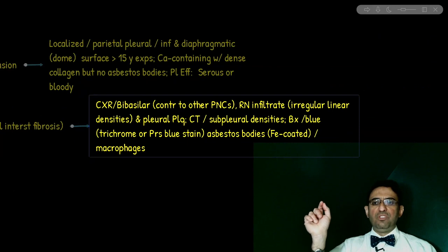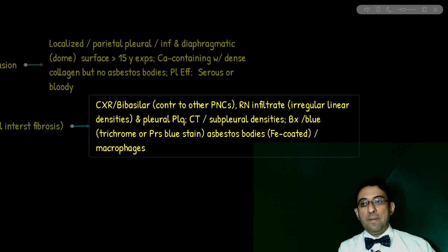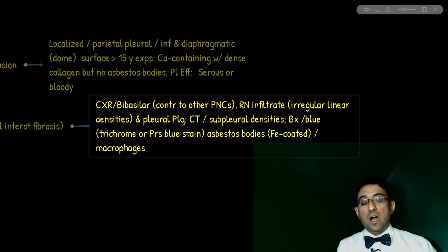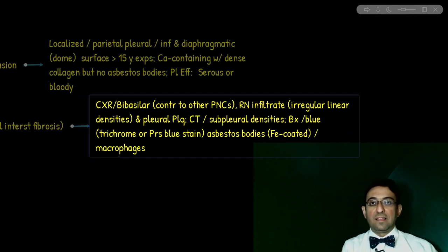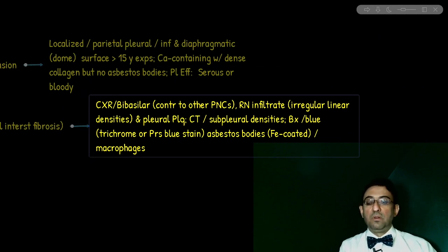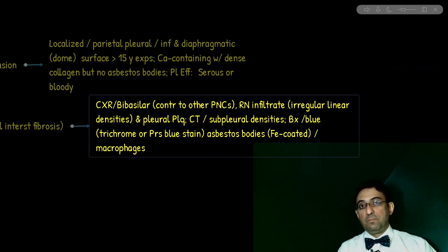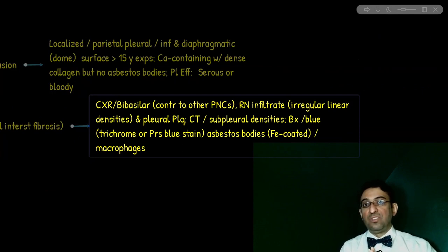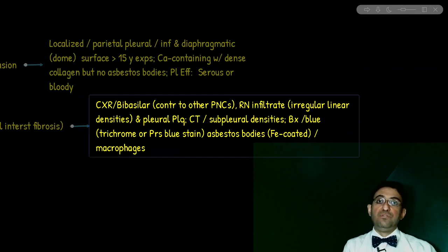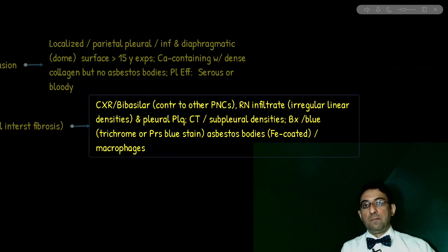What are the exact imaging findings? On chest x-ray, basilar reticulonodular or irregular linear infiltrates on top of the presence of pleural plaque — pleural plaque plus — is asbestosis. The CT finding is presence of subpleural densities in lower lung fields. On biopsy, asbestosis demonstrates asbestos bodies — the iron-containing ferruginous blue-stained bodies within macrophages. This helps differentiate it pathologically from simple pleural plaque. The type of staining used is trichrome or Prussian blue.